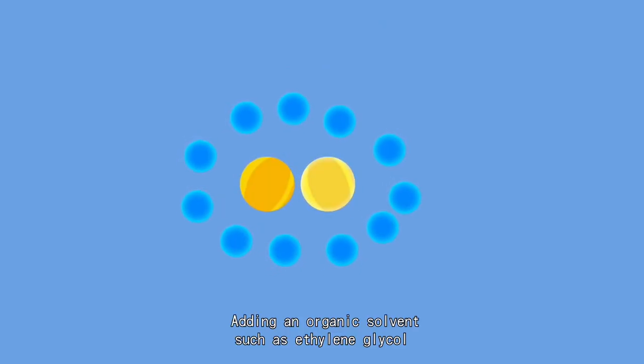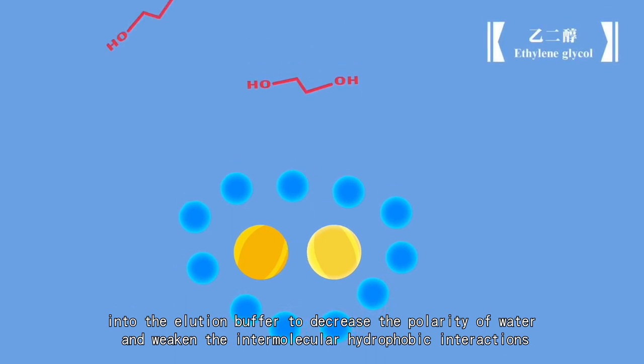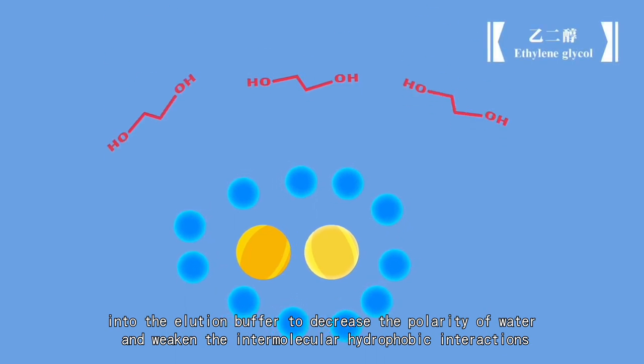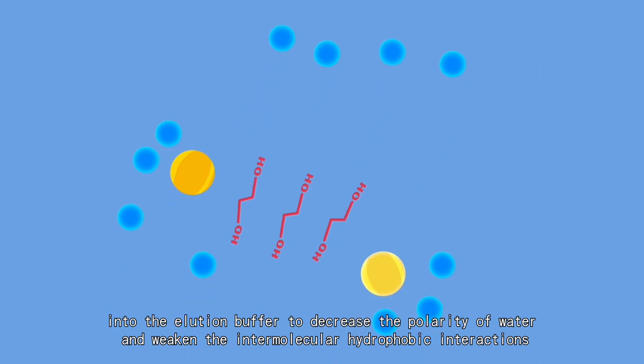Adding an organic solvent, such as ethylene glycol, into the elution buffer to decrease the polarity of water and weaken the intermolecular hydrophobic interactions.